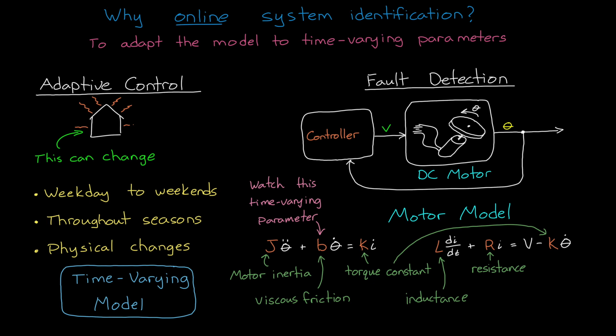We can't do this kind of real-time adaptive control or real-time fault detection with offline system identification. Well, at least not for systems that change quickly relative to how long it takes the offline algorithms to run.